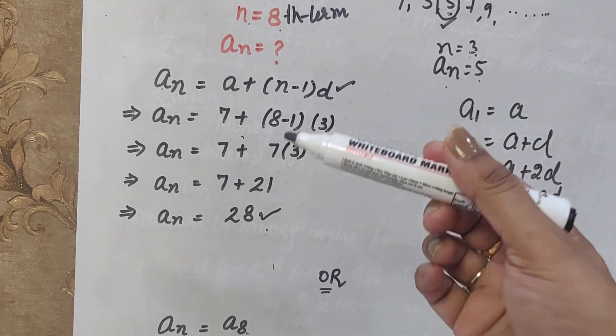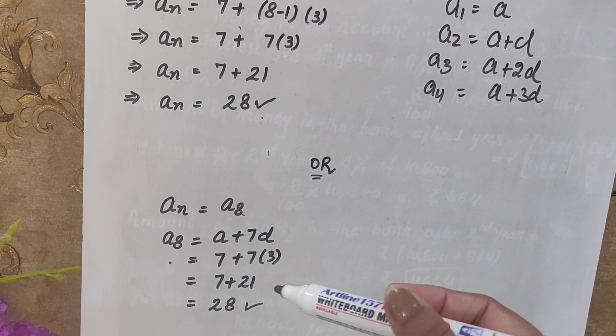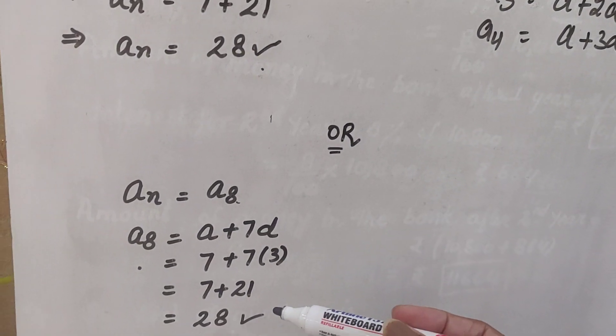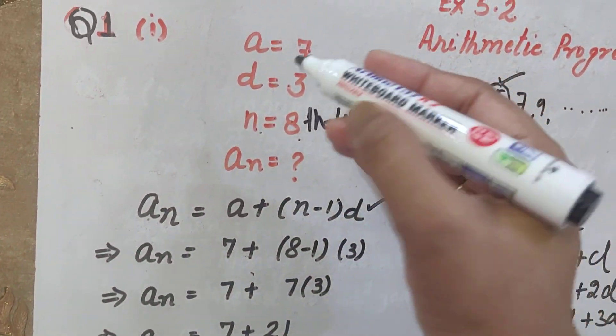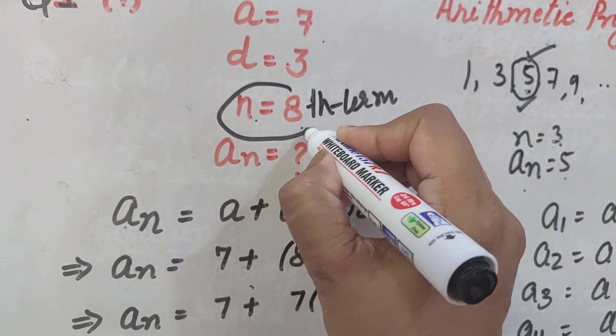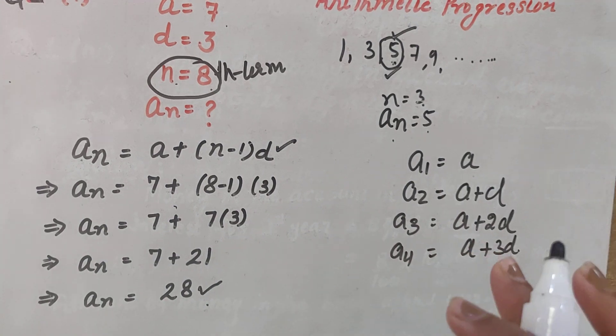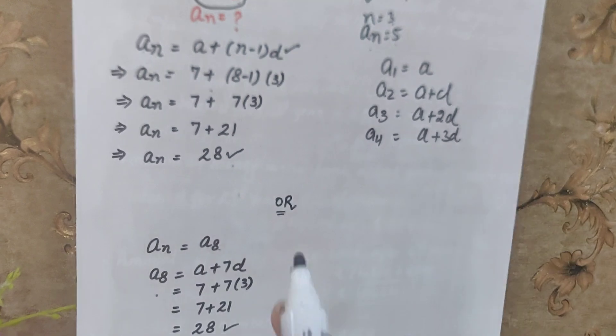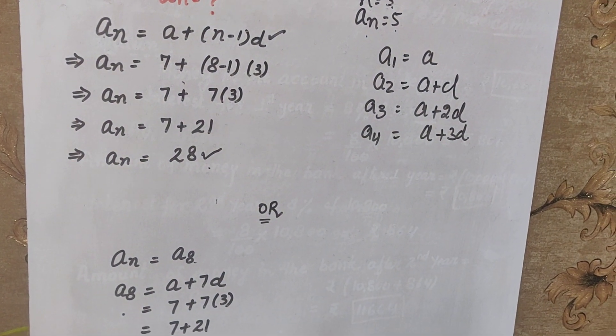It is your choice. If you want to use the formula, you may use the formula. But if you want to do it directly, you can do it directly also. Directly, you can do only when you know N. If you know what is N, that means you know which number term you have to find. And then you can find it directly also without using the formula.